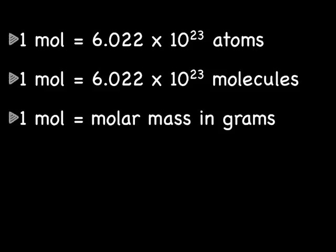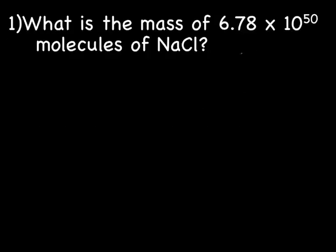Here's a list of the three equalities we've learned so far. We've got one mole equals 6.022 times 10 to the 23rd atoms, one mole equals 6.022 times 10 to the 23rd molecules, or one mole equals the molar mass in grams. You might want to jot those down so you have them handy for later. Now we're going to try a practice problem.